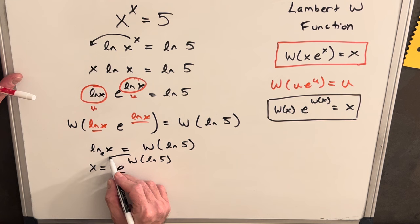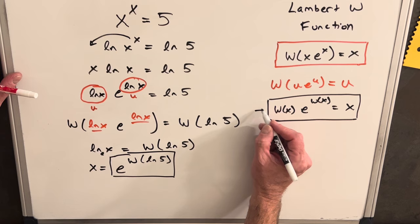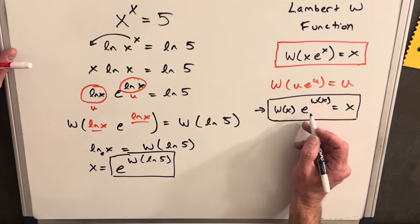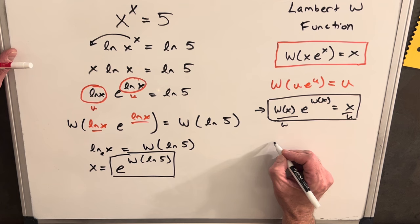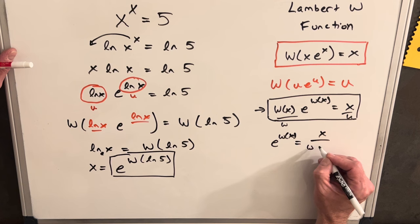But what we can do is, you'll remember we have this second property from when I was going over the introduction that we can use and we can write this in a different form. Because if we manipulate this a little bit, like if we divide both sides by our W, we can write this as e to the W equals x over W of x.